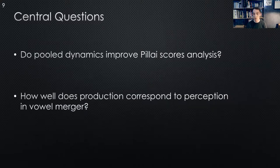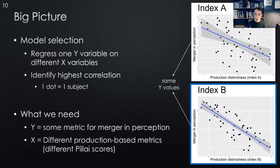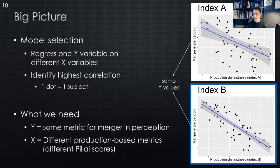The perennial question is how well production corresponds to perception. My approach here is basically model selection — one y-variable regressed on different x-variables to see which has the highest correlation. One dot represents one subject. We have some metric of merger in perception, and we regress it on different indices of how distinct someone is in production — specifically Palai scores. We would say whichever index correlates better with perception has more behavioral validity, and we should proceed with that index when measuring merger. Everything I'm reporting comes from 17 subjects at the University of Wisconsin-Madison — all undergraduate males — who came into the sound booth and did a reading task followed by a perception task.